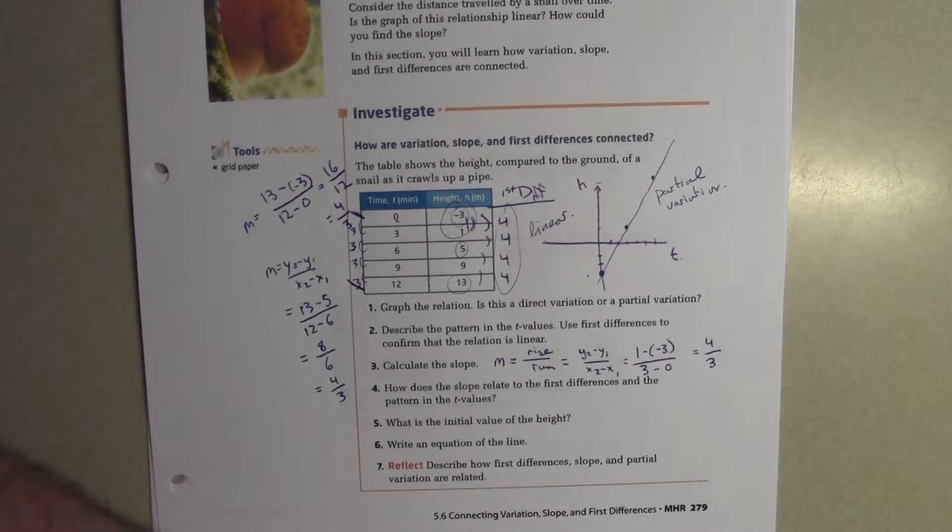Number five. What is the initial value of the height? Alvin. Negative three. Good. Negative three. Time is zero. That's initial value, always.